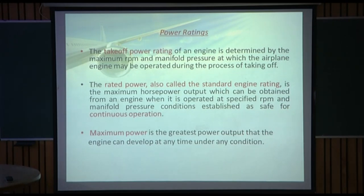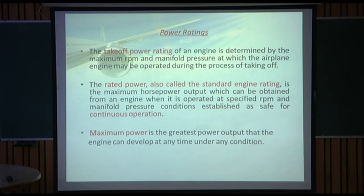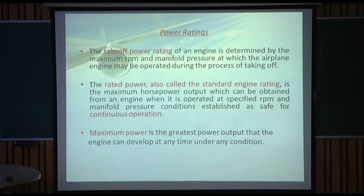The engine has different power ratings. The takeoff power rating is determined by the maximum RPM and manifold pressure at which the engine may be operated during the process of taking off. The rated power — also called the standard engine rating — is the maximum horsepower output which can be obtained from an engine when operated at specified RPM and manifold pressure conditions established as safe for continuous operation.